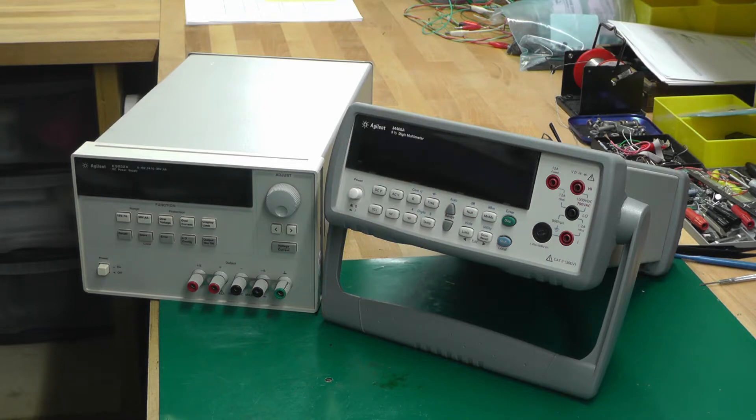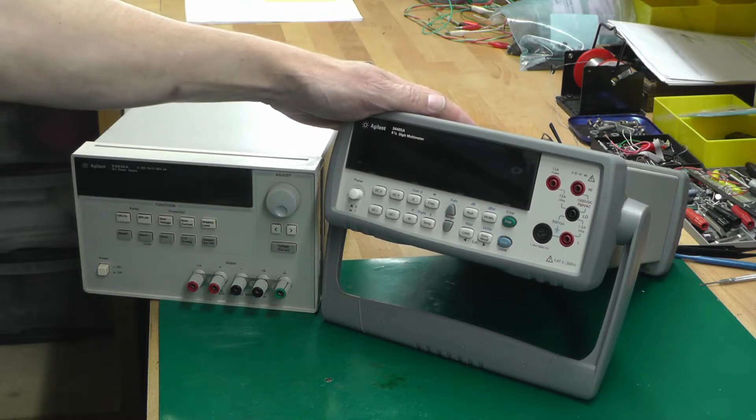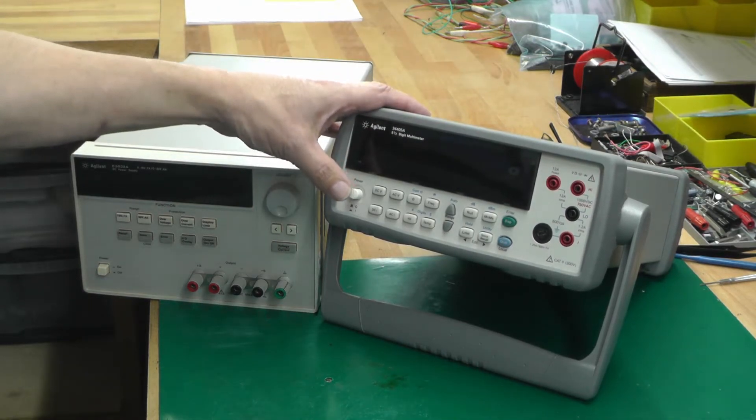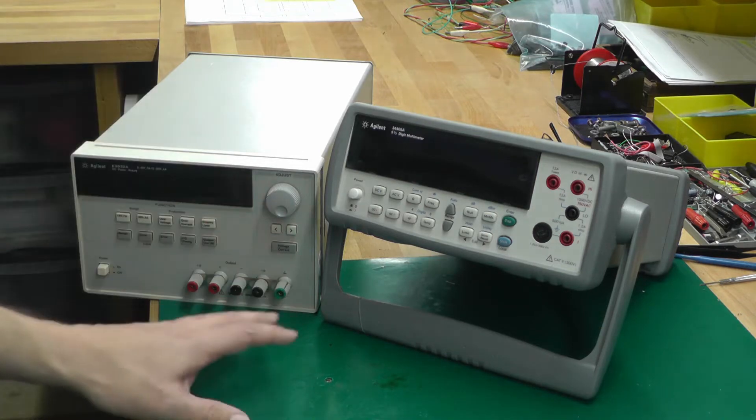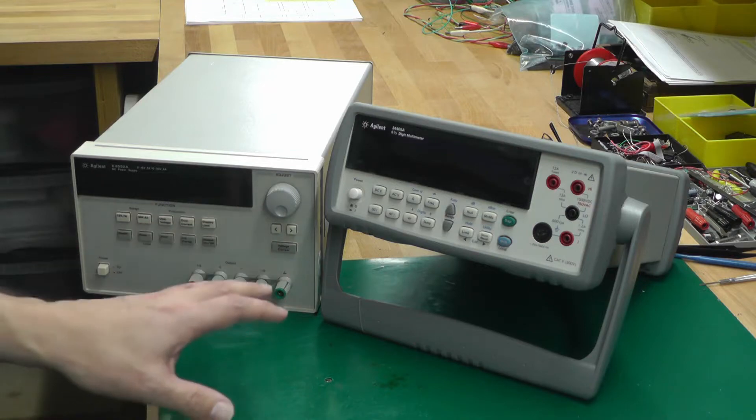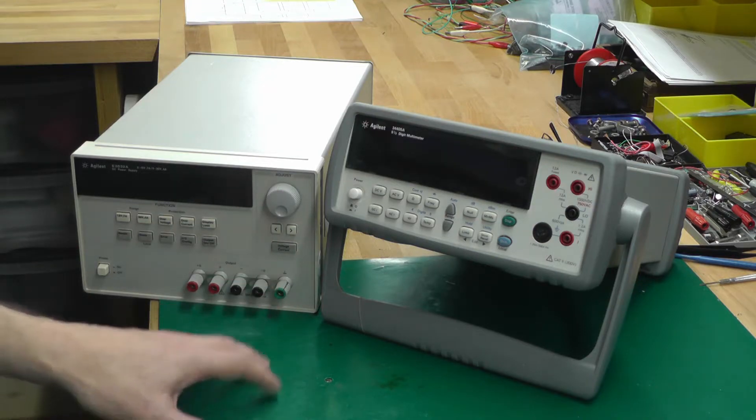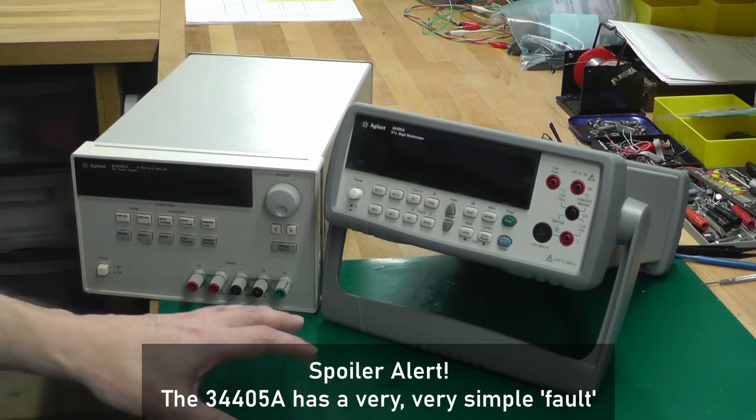I'm going to repair one of them today - it's the Agilent 34405A, five and a half digit multimeter. I'll save the Agilent power supply for another day. I picked these up from the same supplier, and they've been through a repair facility as far as I'm aware.